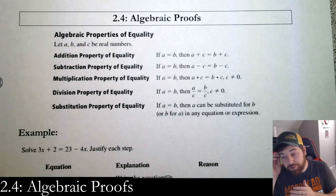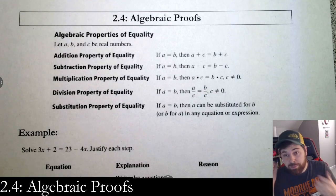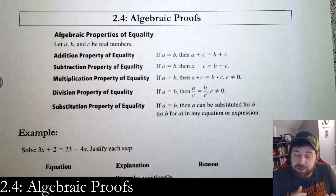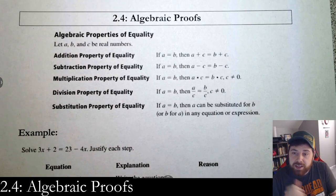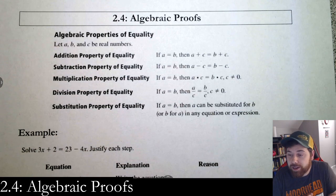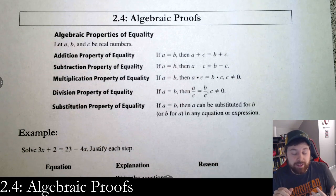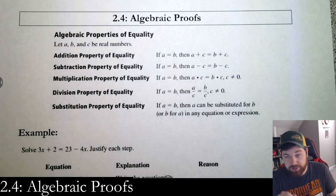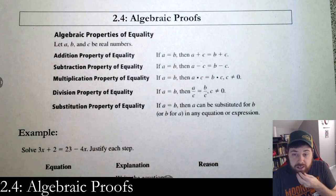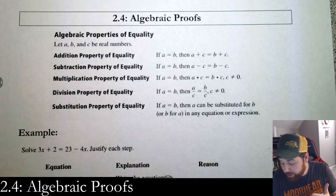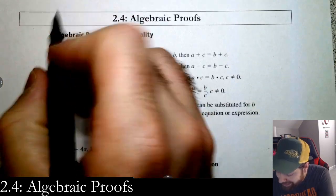Alright, let's get on to section 2.4. We talked about postulates and diagrams last time — now we're on to algebraic proofs. So we're finally getting into the proofs of this section.